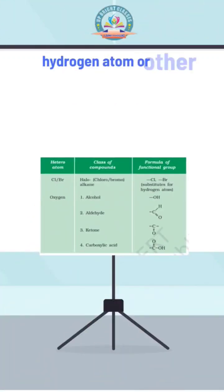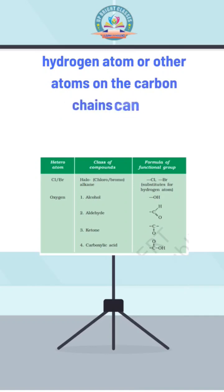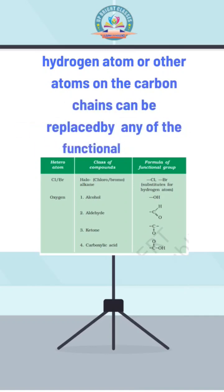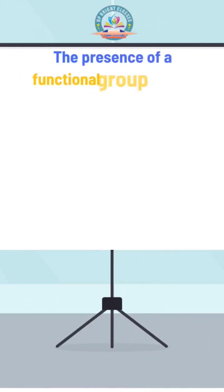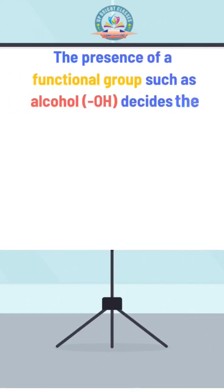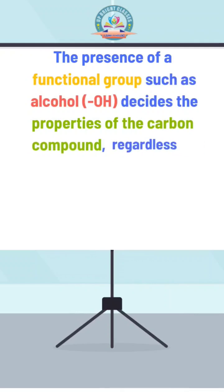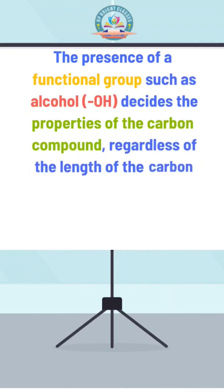Hydrogen atoms or other atoms on the carbon chains can be replaced by any of the functional groups. The presence of a functional group such as alcohol decides the properties of the carbon compound, regardless of the length of the carbon chain.